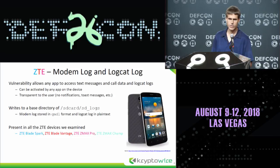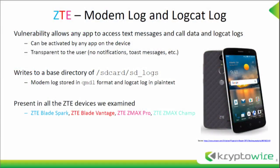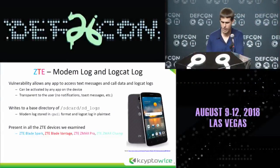Starting off with ZTE, we looked at a bunch of ZTE devices on carriers and each ZTE device we looked at contained this vulnerability. Essentially any application on the device can interact with a custom service that they have and have this service start writing the modem log and the logcat log to the SD card. The system-wide logcat log is not directly accessible to third-party applications no matter what permissions they request. When this logging is occurring, there's no visual or audible cue to the user, and it writes to a base directory of just SD card / SD underscore logs.